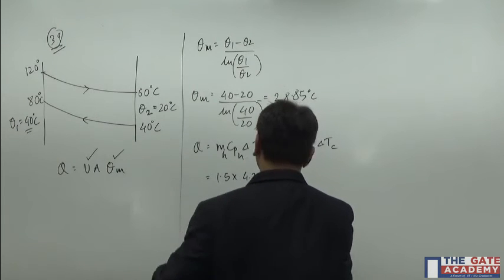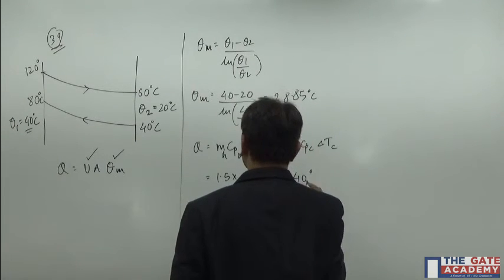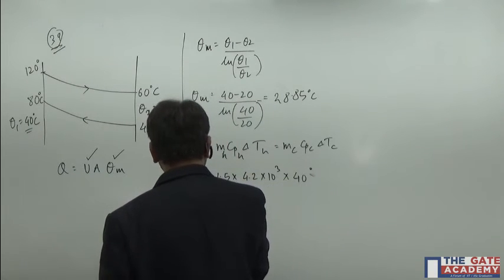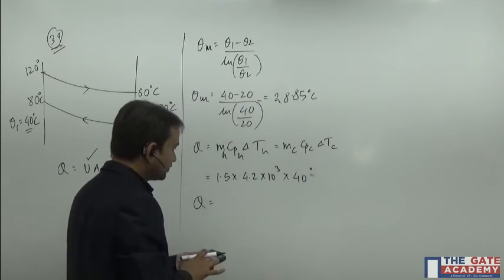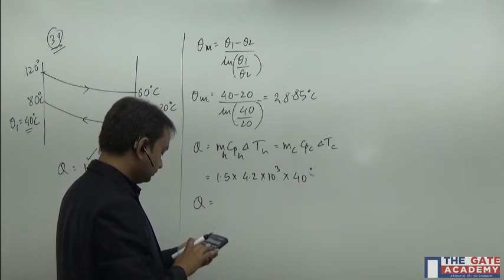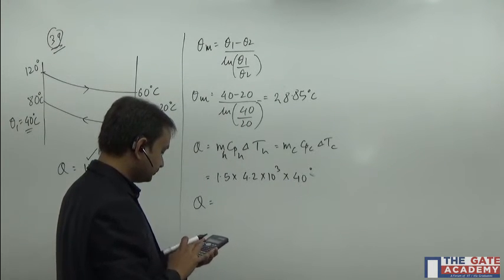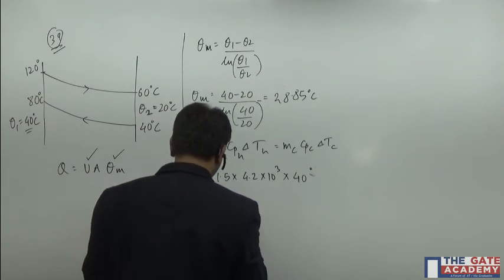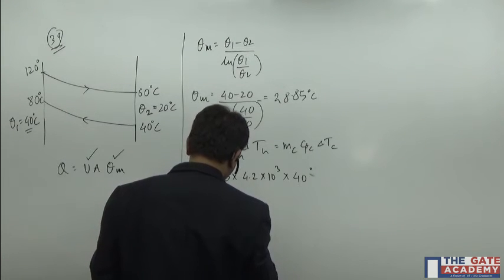Which is 80 minus 40, which is 40 degrees Celsius. When you compute all these things you will get q value as 1.5 times, you will get 252000.